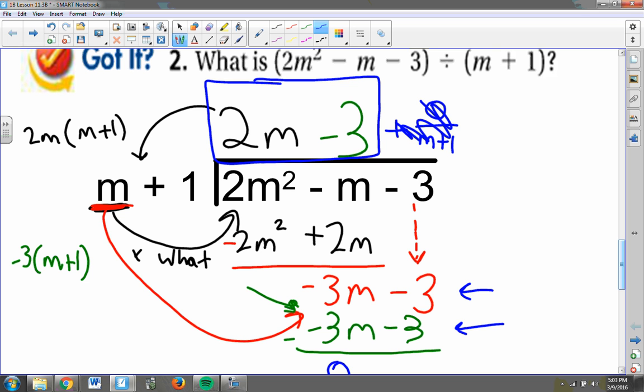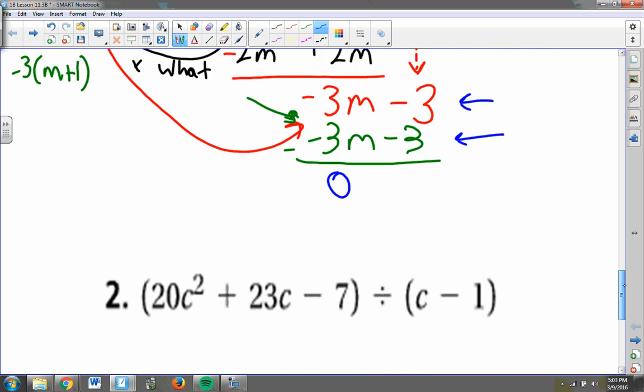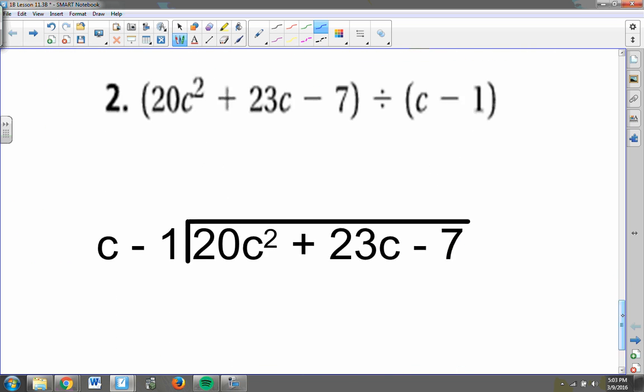Now, I would like you to try one of these on your own. I would like you to try dividing 20c squared plus 23c minus 7 divided by c minus 1. So follow this same process again. And when you're done, come on back and I'll show you what we should get. So pause the video here, take a look at this problem, and see what you get.